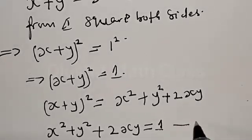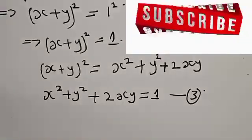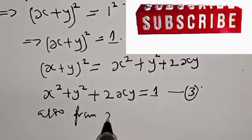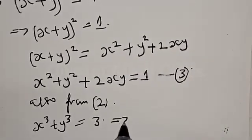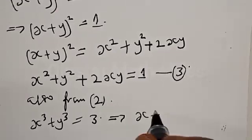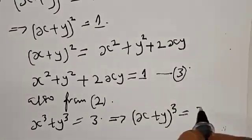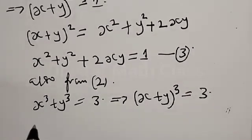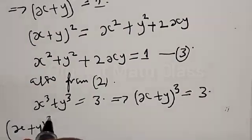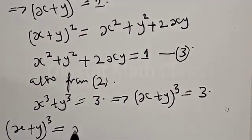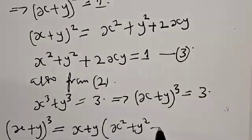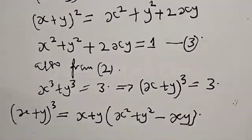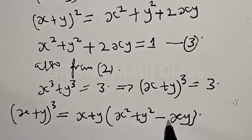Let's call this equation 3. Also, from equation 2 — that is s cubed plus y cubed equal to 3 — s cubed plus y cubed can be expressed as s plus y, multiplied by s squared plus y squared minus sy.